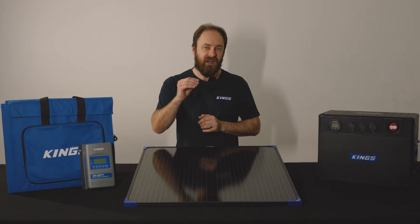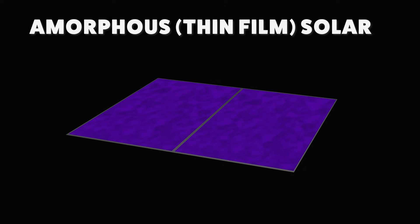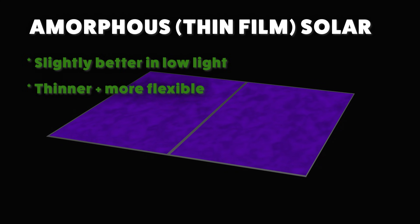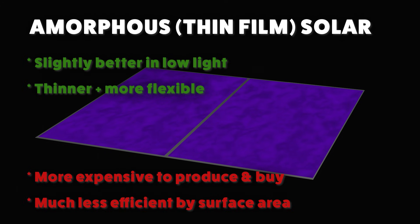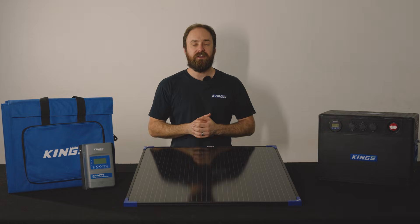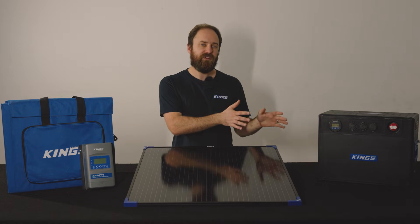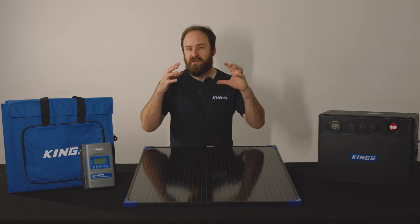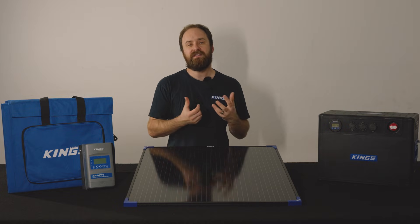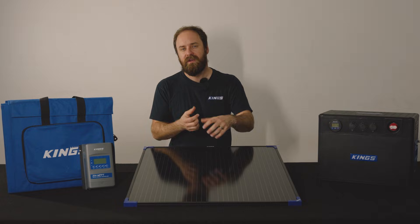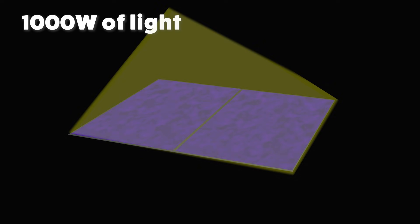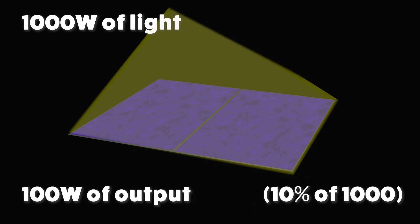Amorphous cells are slightly better in low light and cloudy conditions. They're thinner and more flexible, but that comes at a massive cost as they're much more expensive to produce and buy, and much less efficient for surface area. You'd need about two to three times the surface area with an amorphous or thin film solar cell to get the same output as a mono or polycrystalline cell. The absolute top shelf amorphous cells are about 10 percent efficient — meaning they can convert about 10 percent of the sunlight that hits them into usable energy. So if you had a one meter square amorphous thin film solar cell and 1,000 watts of light was hitting it, it would only output about 100 watts.